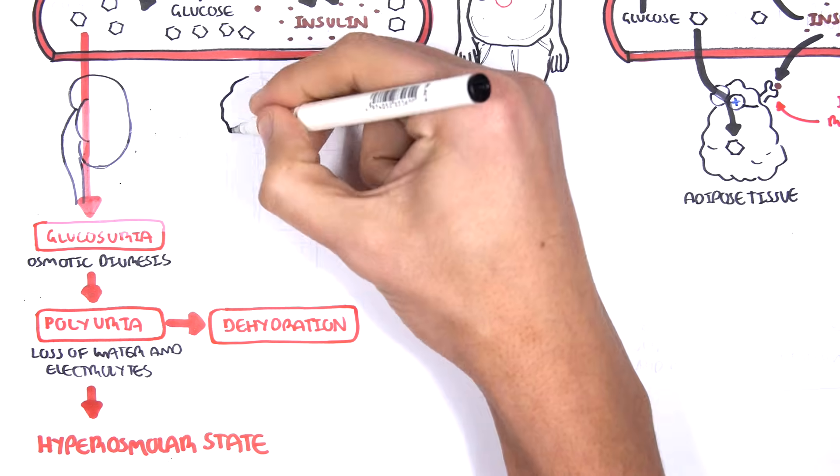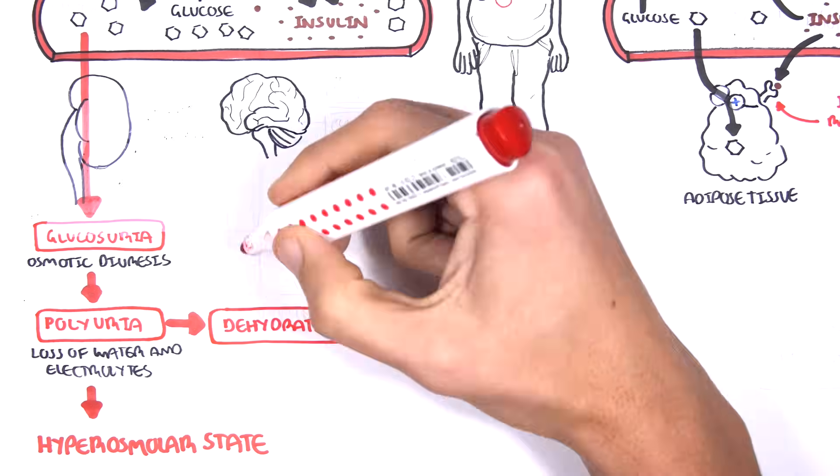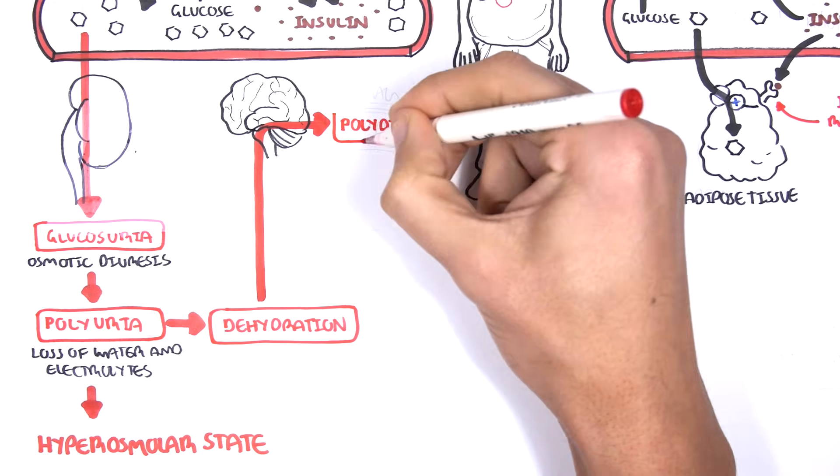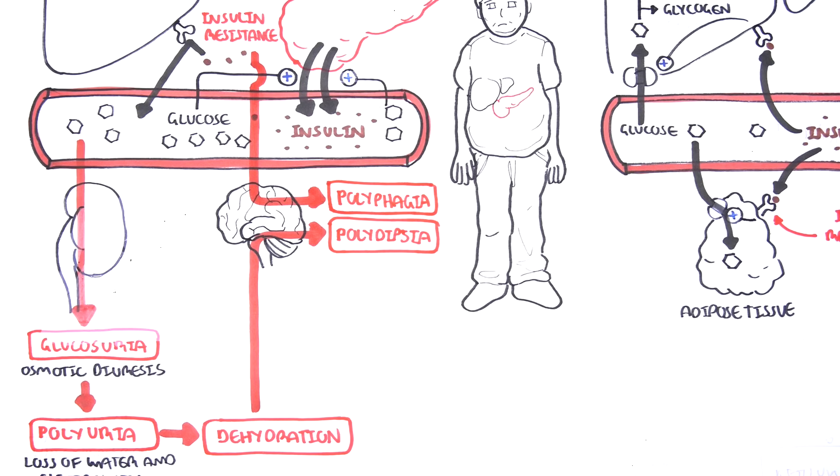The dehydration will stimulate the brain to drink more water. So we get polydipsia. Insulin resistance can actually lead to polyphagia, which means the urge to eat more or the feeling of hunger. And how does this happen? Well, if there is high blood glucose and it doesn't go into the tissues that need it, the organ will say, hey, I'm not receiving enough food, feed me. And so you get polyphagia.